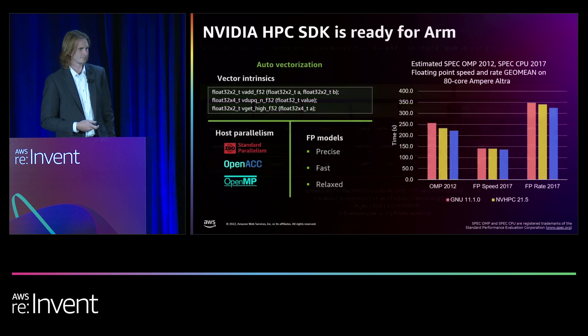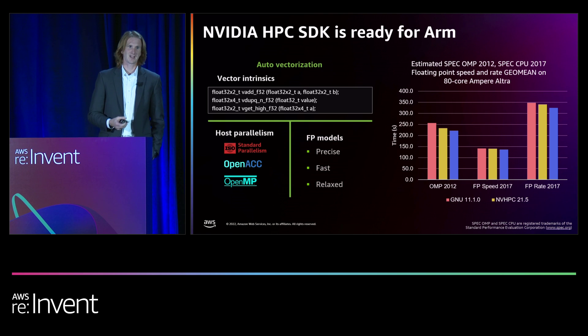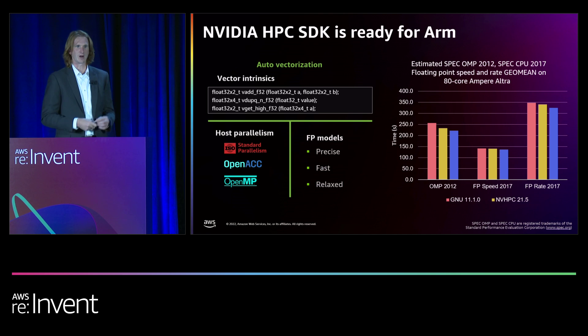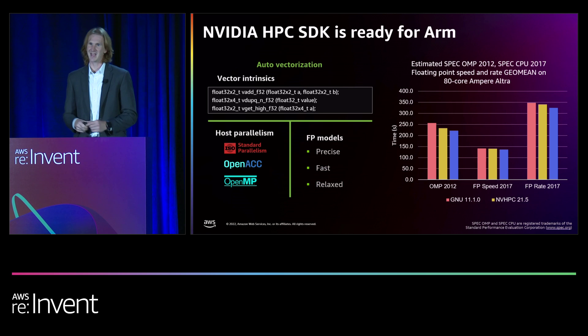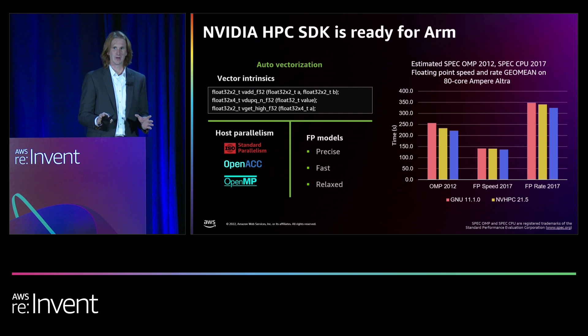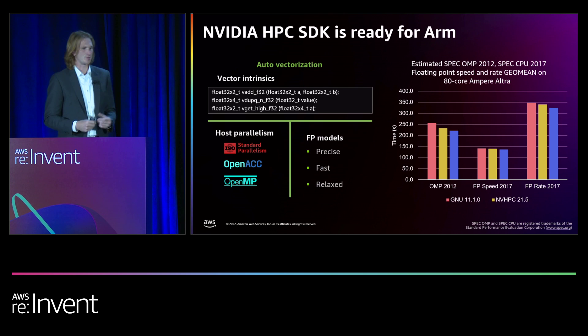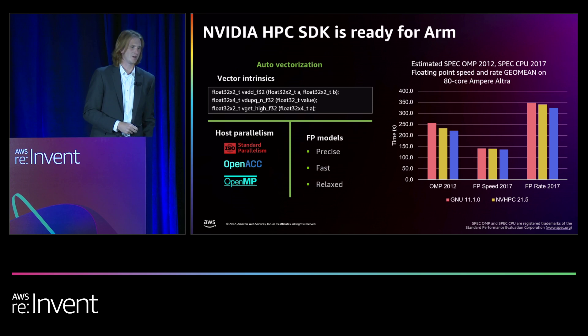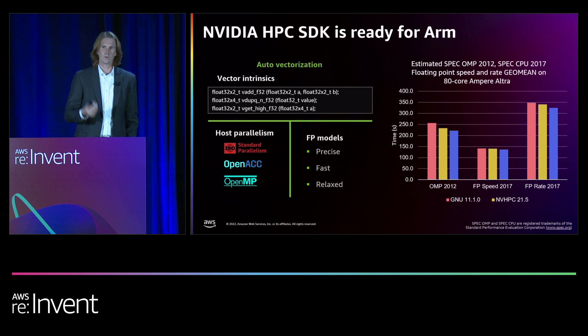ARM support has been in the HPC SDK for several years now. This is as much a CPU product as it is a GPU product — you can absolutely target CPU-only solutions using the NVIDIA HPC SDK. So many people are surprised; they think NVIDIA equals GPU. You could use this HPC SDK on an instance that has no GPU and get really good performance. You can target CPUs using standard language parallelism in C++ or Fortran, Python, or directive-based parallelization like OpenACC and OpenMP. We also support vector intrinsics and assembly language.